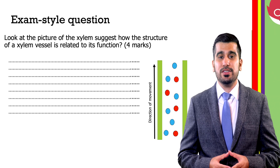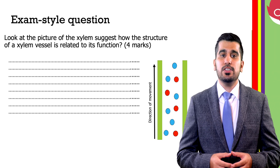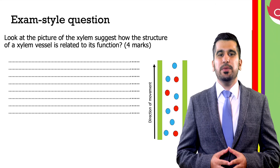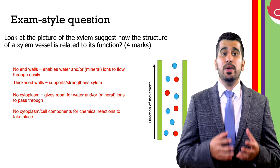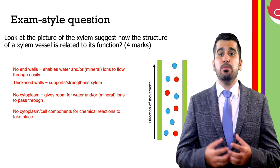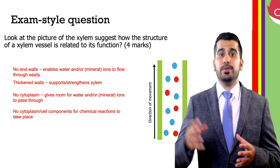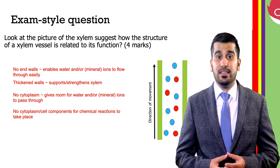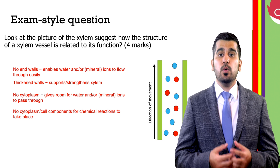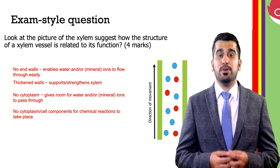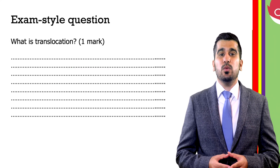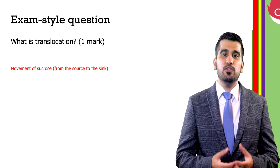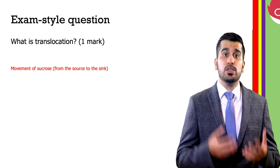Let's look at some exam-style questions. Look at the picture of the xylem. Suggest how the structure of the xylem vessel is related to its function. There are no end-to-end walls — this enables water or mineral ions to flow through easily. They have thickened walls, which supports and strengthens the xylem. They have no cytoplasm, which gives room for water and other mineral ions to pass through. Translocation is the movement of sucrose from the source to the sink.